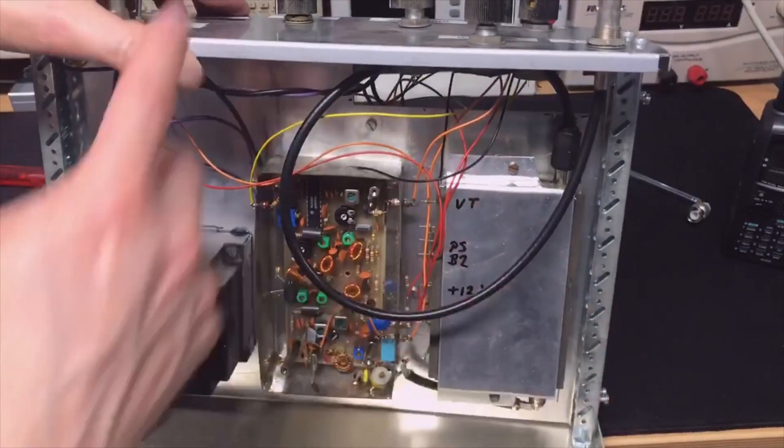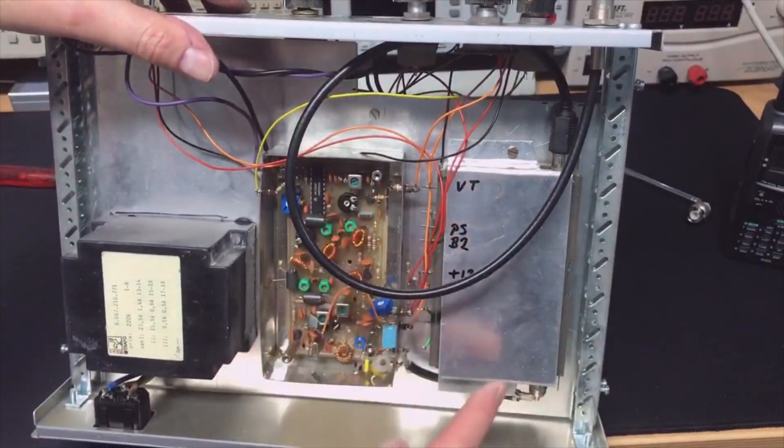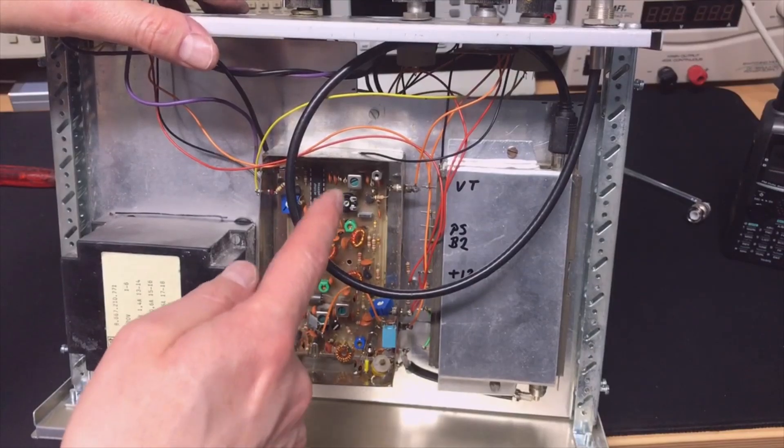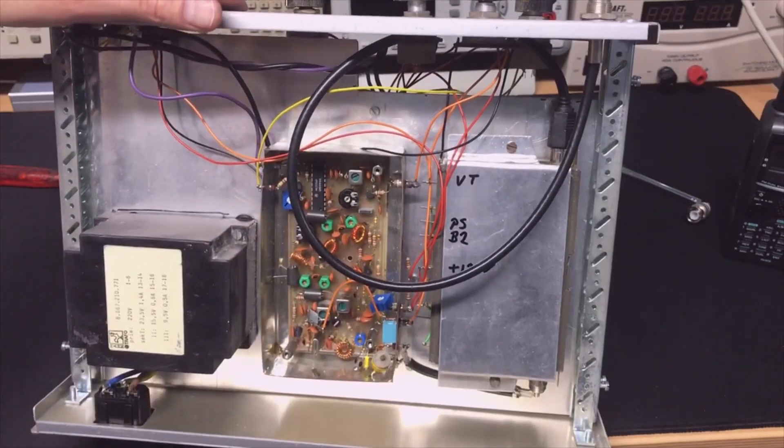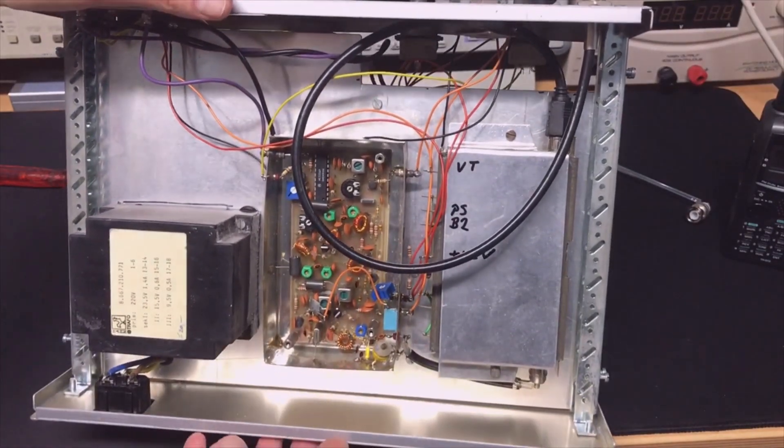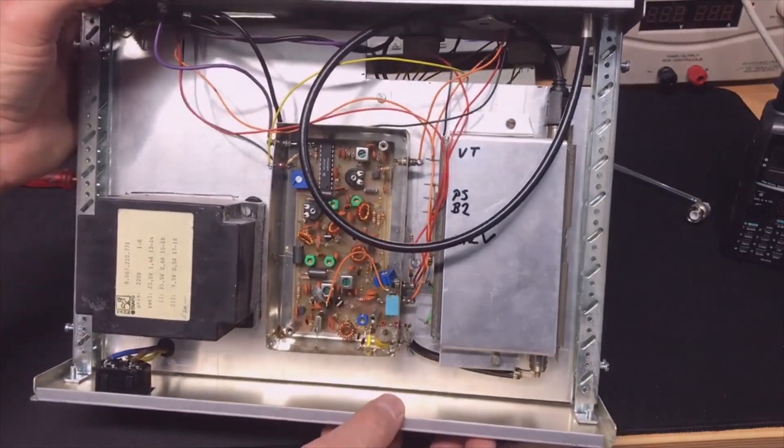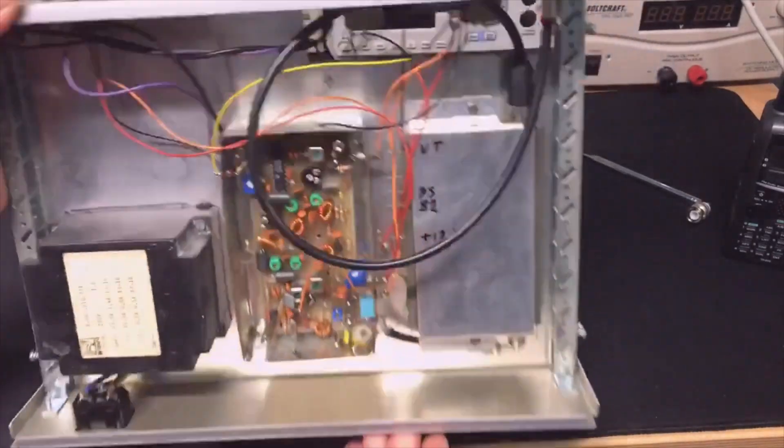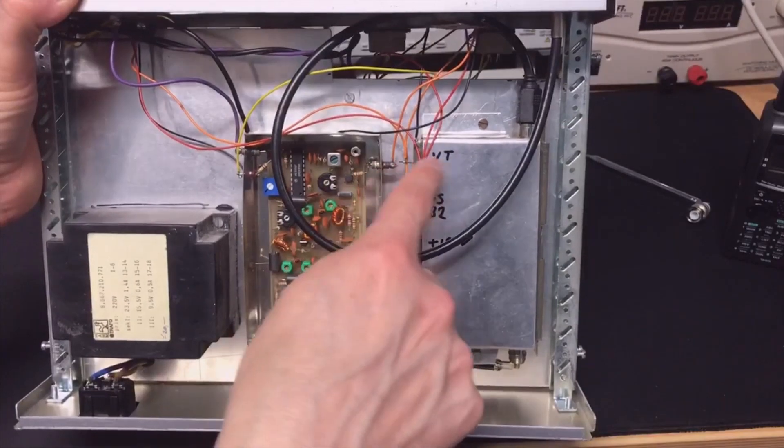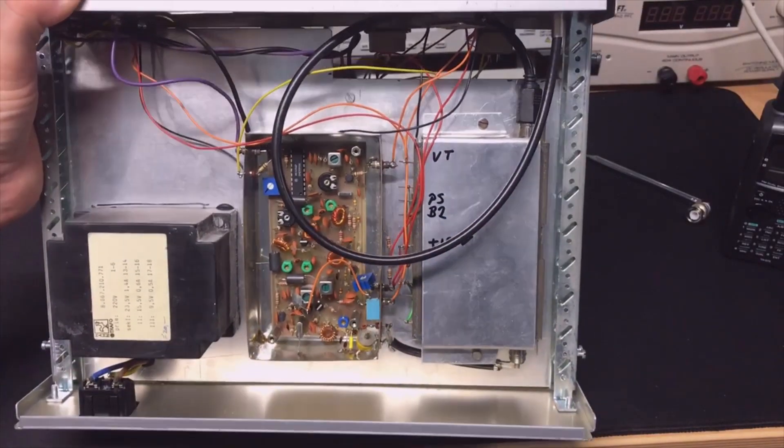So the signal comes into the tuner, converts it down, comes into this system and then you can work with the lower frequency. Adjusting of the frequency is just done by changing the power on the tuner.